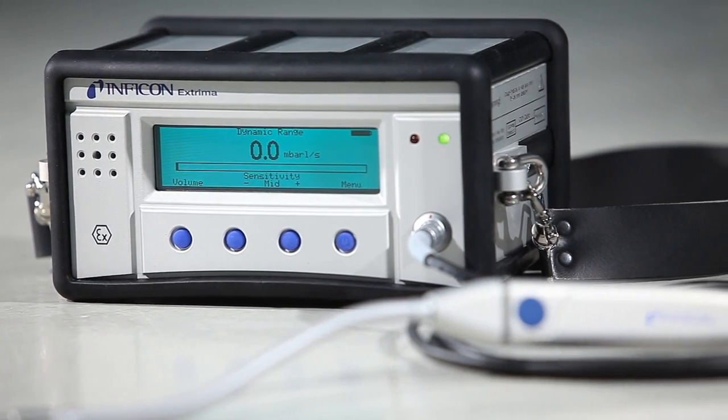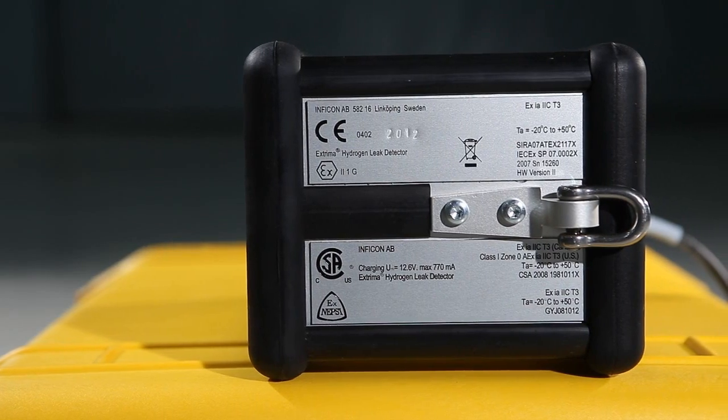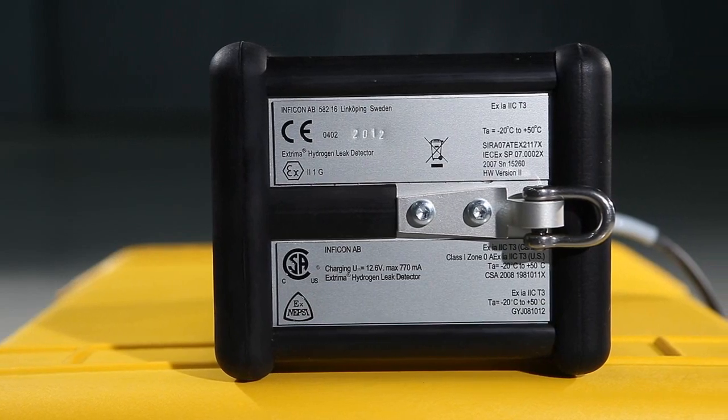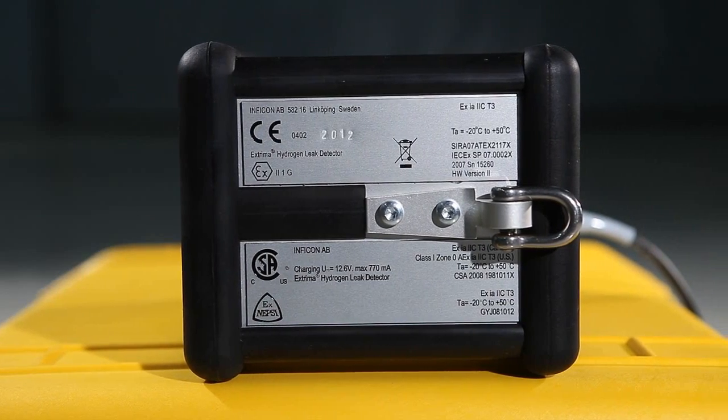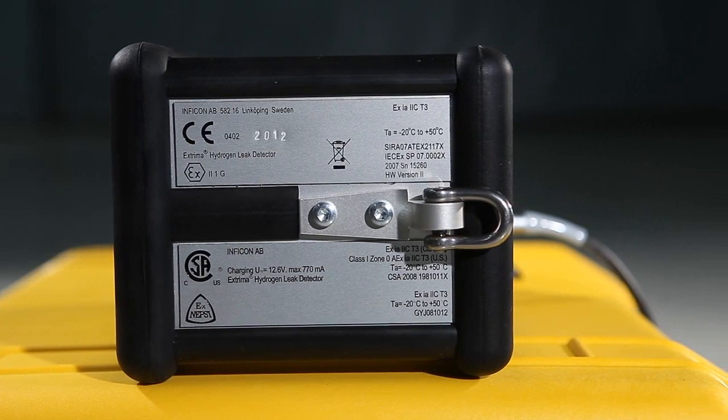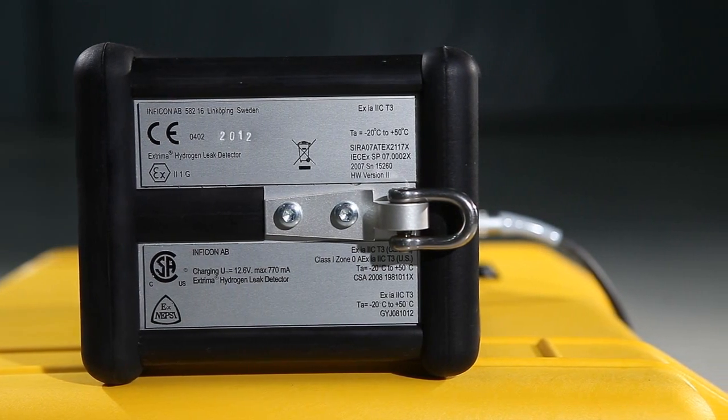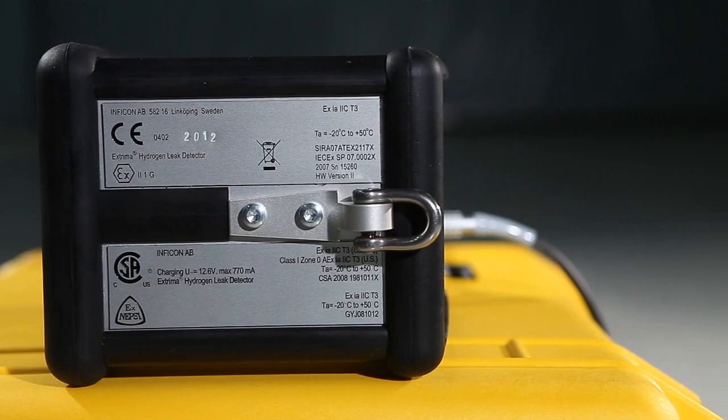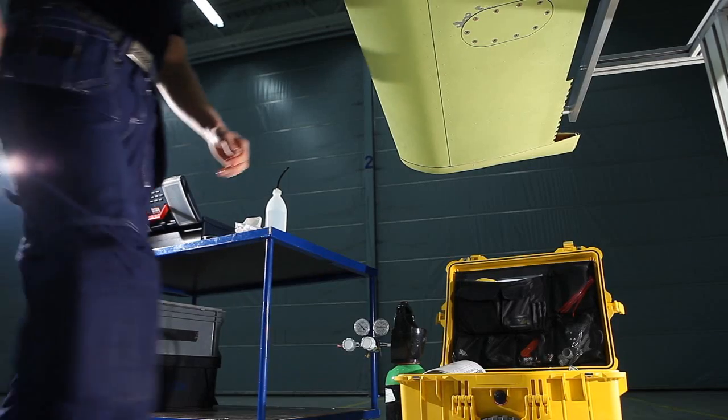The Xtrema leak detector is intrinsically safe and certified for working in high-risk hazardous locations all over the world. This means that you can enter an aircraft fuel tank with a detector right after defueling without wasting precious time for purging or depuddling the tank.